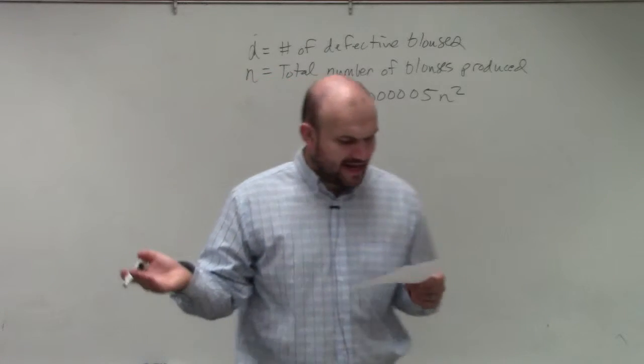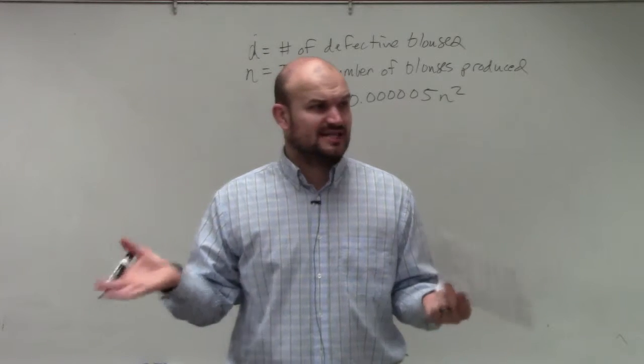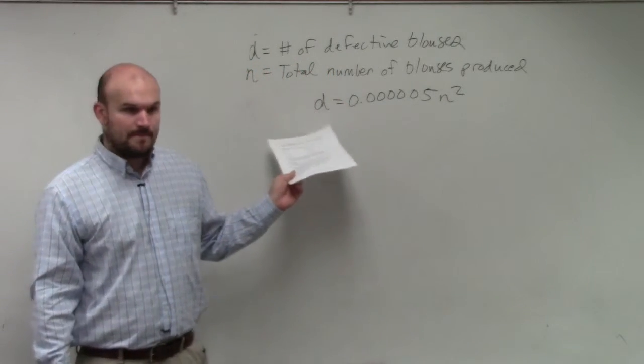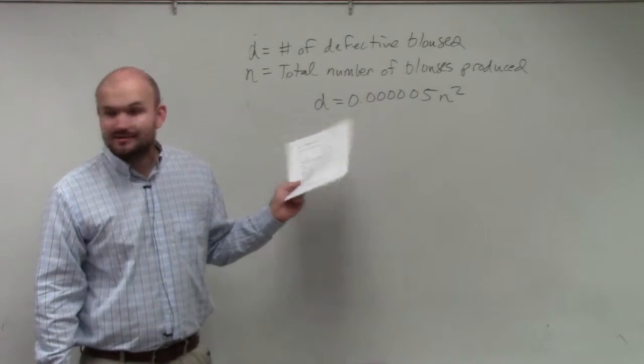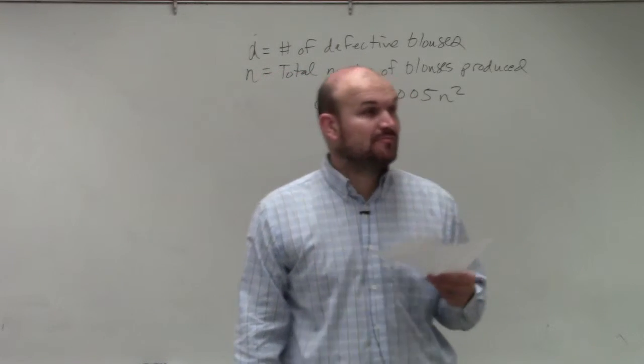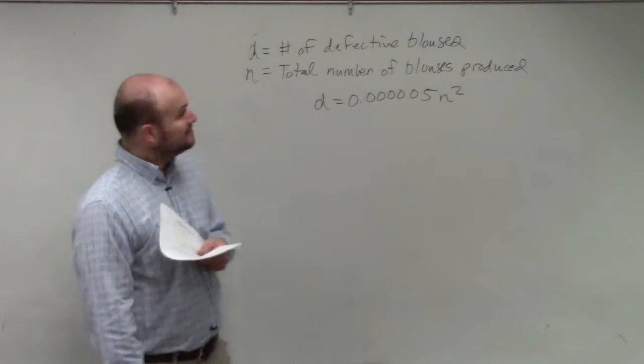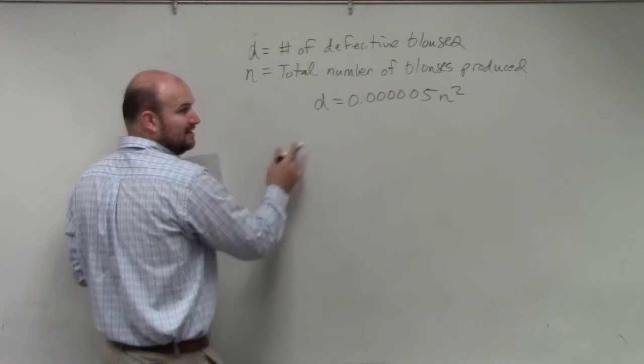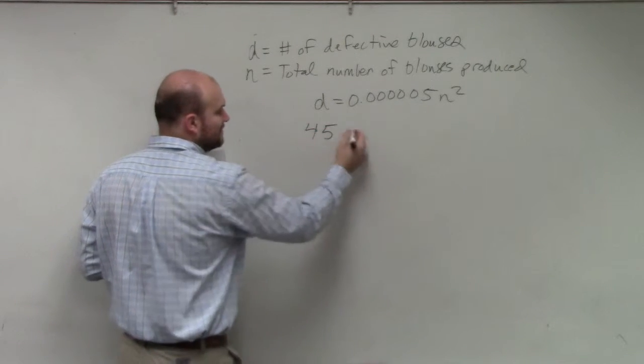So then question letter A says, what is the total number of blouses? So what are they asking? Which variable are they looking for? Which one says the total number? n, right? So they're asking us for n. And they're saying when 45 blouses are defective. So which variable represented the defective blouses? d. So therefore, if they're asking for n and they're telling us how much d is, you just plug in 45 for d.